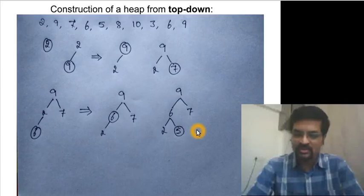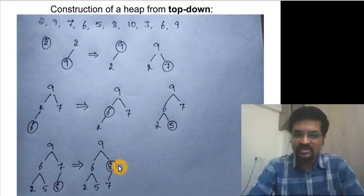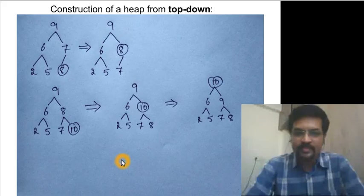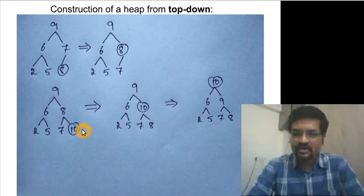Next, key 8 is inserted. It needs to swap: 7 is pulled down and 8 comes up, but 8 does not pull down 9 since 9 is greater. Then key 10 is inserted. 10 is greater than 8, so 8 is pulled down; 10 is also greater than 9, so 9 is pulled down and 10 goes to the top.